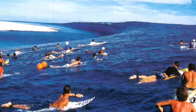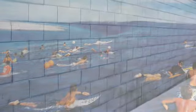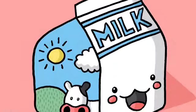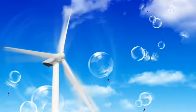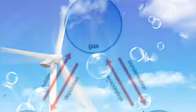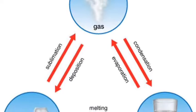Everything in this world is made of matter. Walls are made of matter, milk is made of matter, and even the air is made of matter. Now, matter comes in three different states: liquids, solids, or gas.